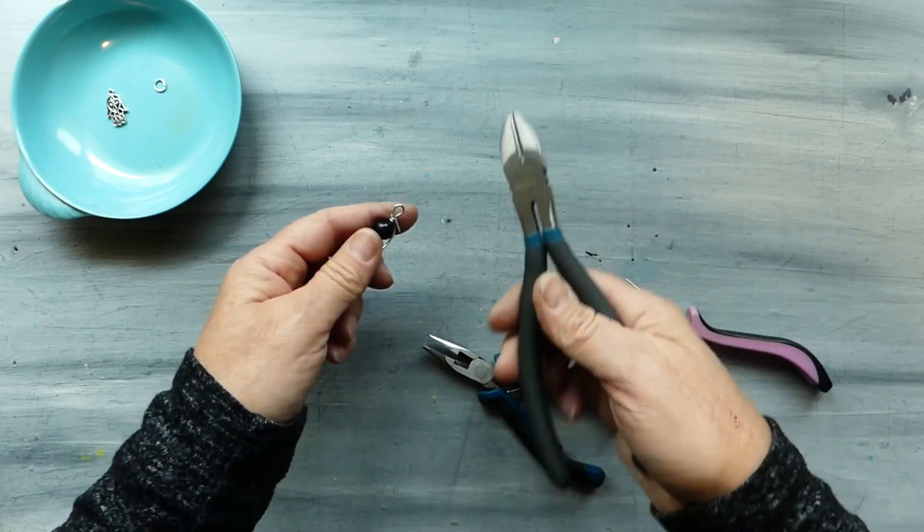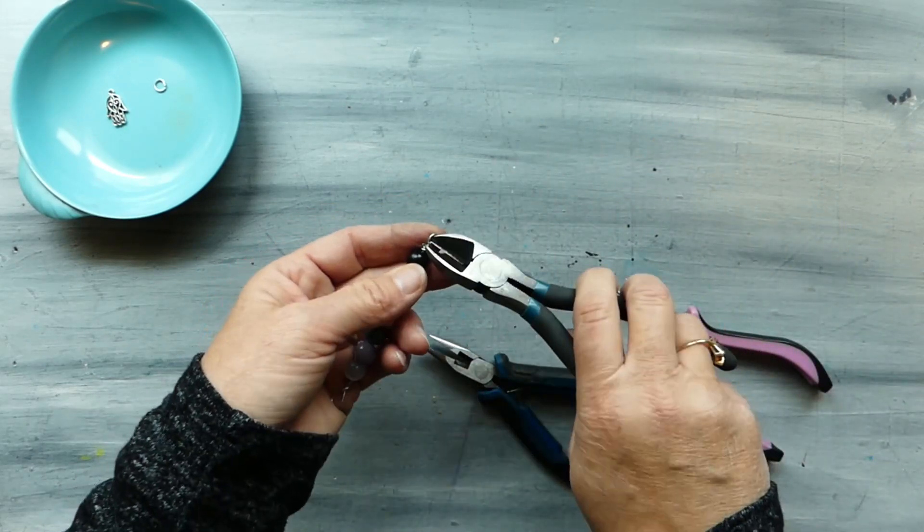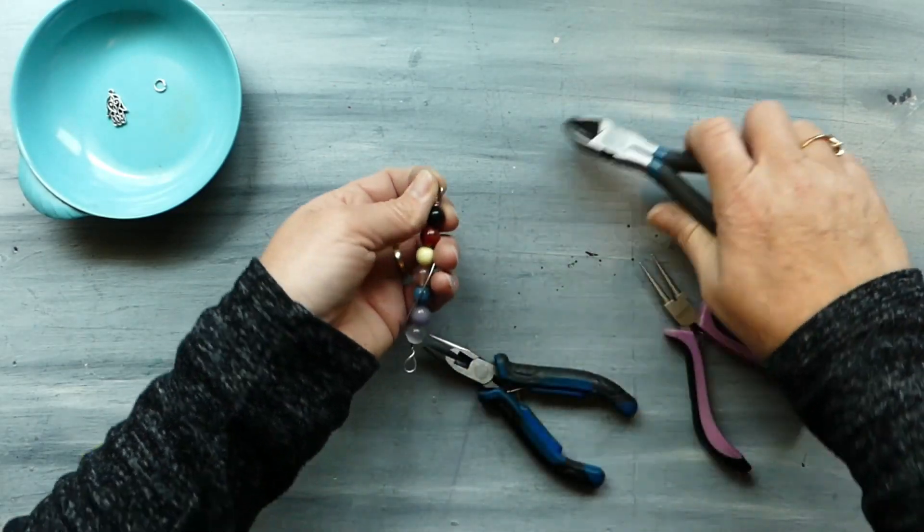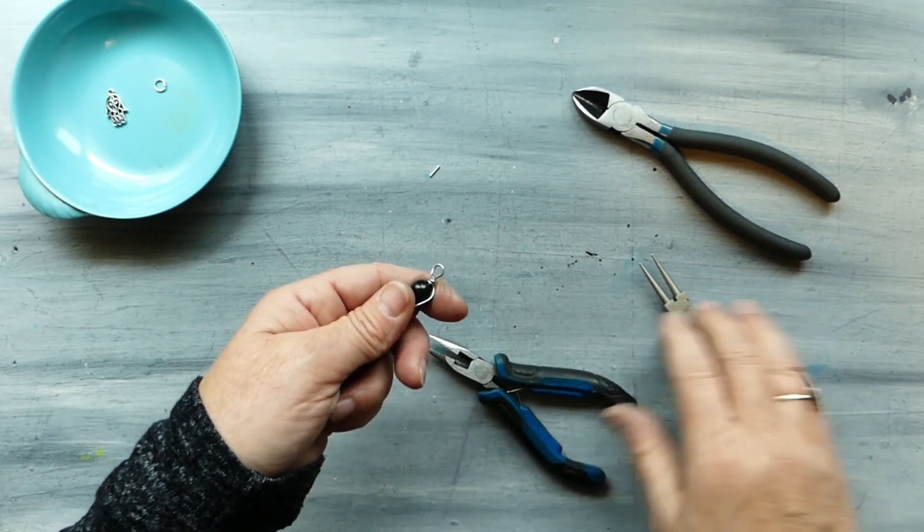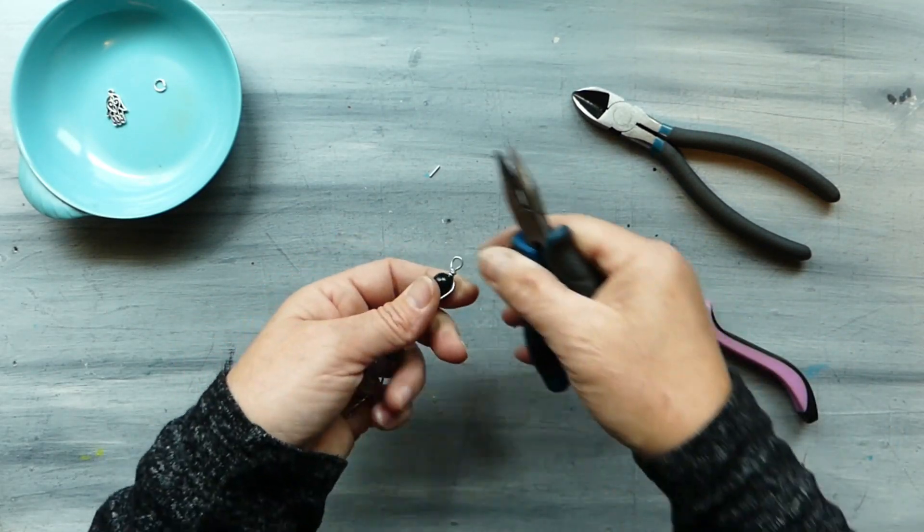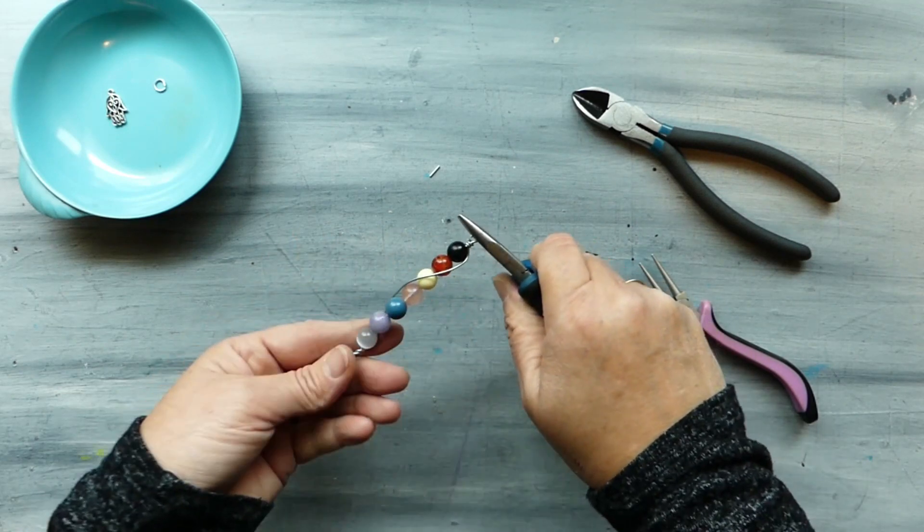And then taking our snips we want to cut off nice and close to where we just wrapped, watch fingers because that can be pretty tight in there. All right now it gives us our little loop here.